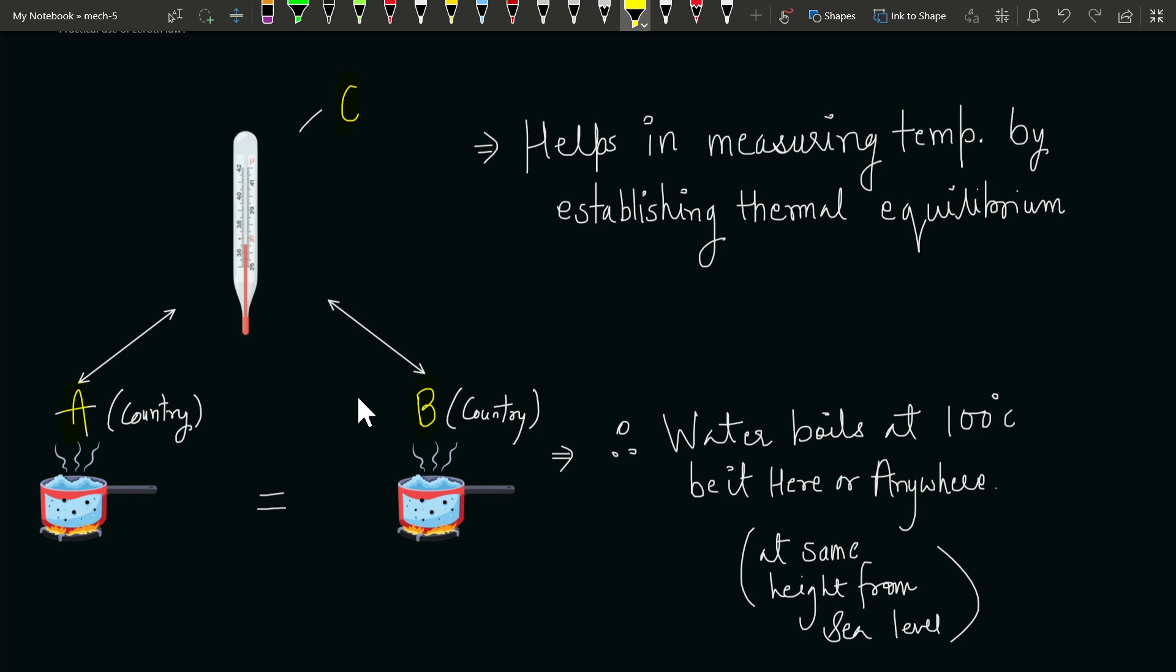This is the basic understanding of the zeroth law. Now let me tell you the physical significance of it. Let me consider this C body as a thermometer and this A body as the boiling water in country A.